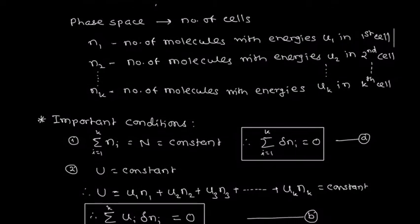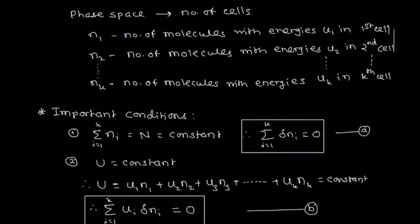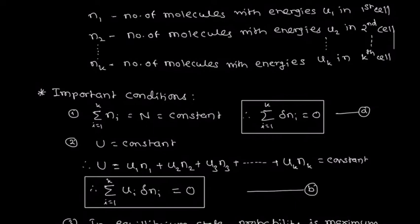The second condition is that the total energy of all molecules always remains constant. The total energy is the sum of u1·n1 plus u2·n2 plus u3·n3 up to uk·nk. That term is constant, therefore its derivative — the summation of ui·δni — is always equal to 0. This is the second condition.